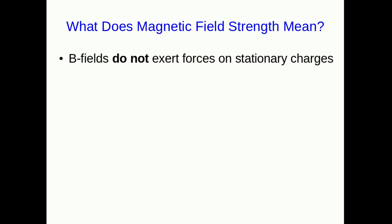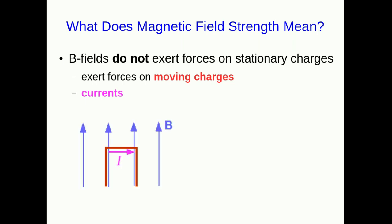We saw a rather imprecise statement about magnetic field strength in the last lecture to do with how quickly a compass needle comes back to pointing in the direction of the B field, but we need something better than that. We can't use what we did with E fields where we use a probe charge because B fields don't exert forces on stationary charges. They only exert forces on moving charges. Well, that means they exert forces on currents in wires because that's all a current in a wire is, moving charges.